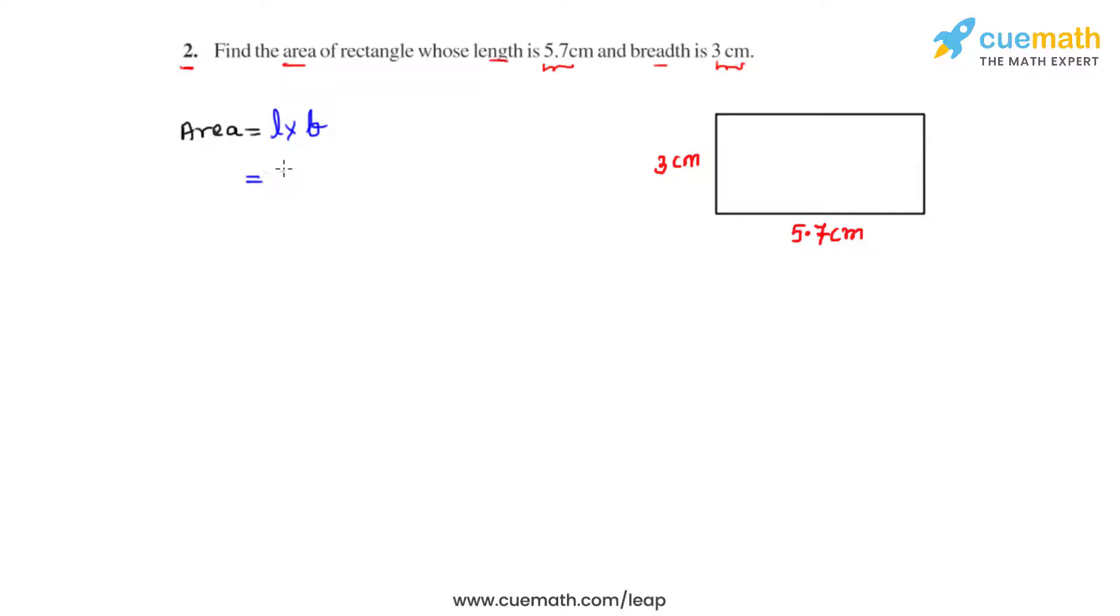So we will be substituting the values, that is 5.7 centimeters times 3 centimeters. So we can write it as 57 by 10 centimeters times 3 centimeters.